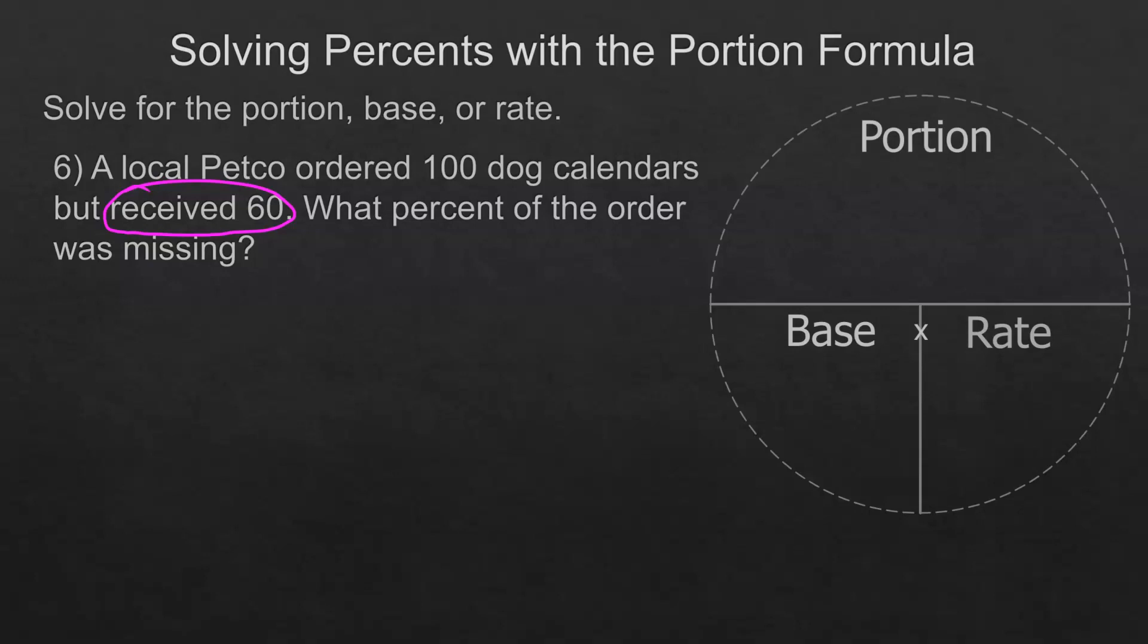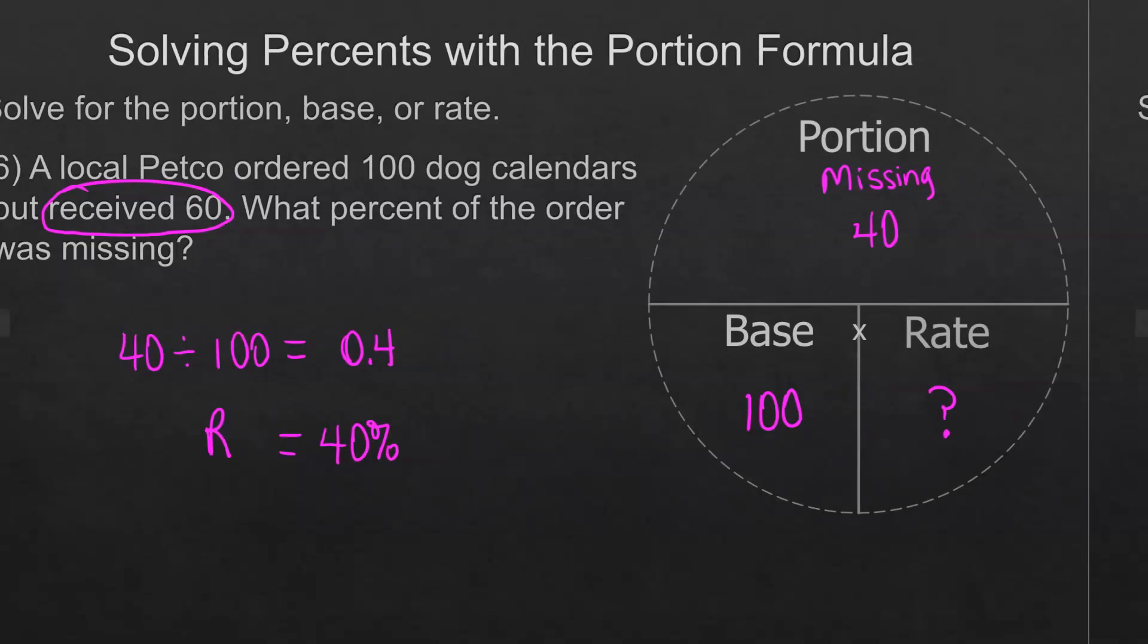There were a total of 100, that would be our base. We're looking for the percent, so we're looking for the rate. If they received 60 then they were missing 40. The numbers are kind of nice on this one because we're just taking 40 and dividing by 100, which is going to be 40%. Always read carefully.